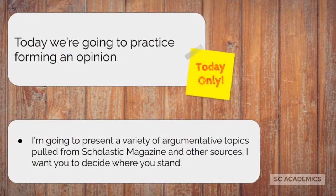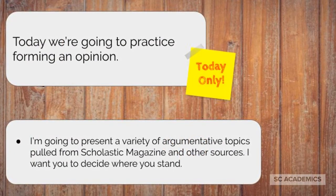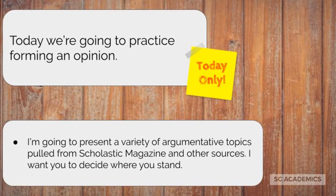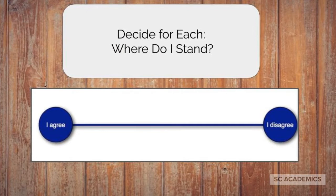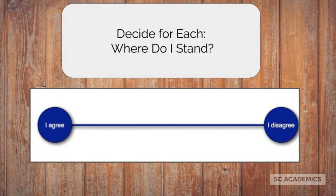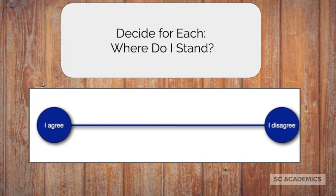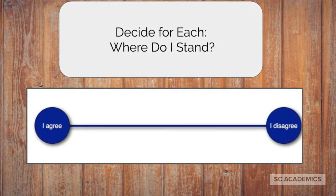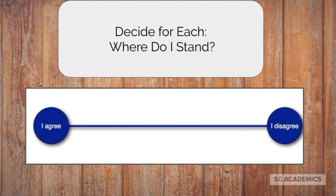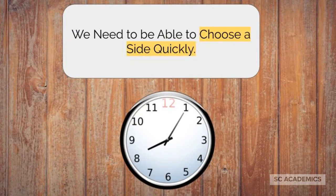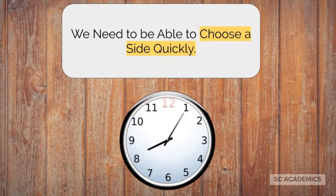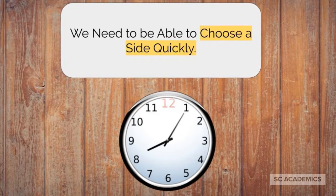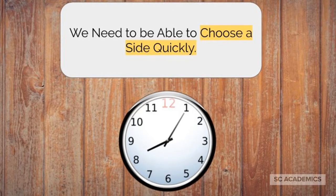Because of that, we're going to practice forming an opinion. I'm going to present a variety of argumentative topics pulled from Scholastic Magazine and other sources. I want you to decide where you stand with each of those topics. With an argumentative essay, you either need to agree or disagree with whatever the topic prompt is asking you. This can be kind of tough — you don't necessarily have to believe firmly one way or another yourself, but you need to pick a side for your writing, even if you're not 100% sure. Remember, you need to be able to choose a side quickly. You may be given only 90 minutes to read a prompt, read an article, form an opinion, come up with three points of evidence, and then write your whole essay. So picking which side you're going to go with needs to be something you do fast.